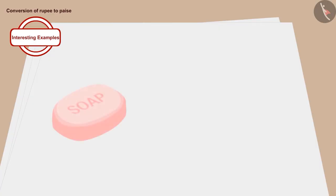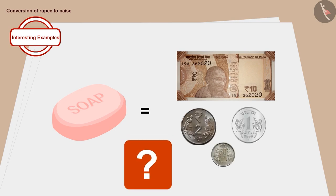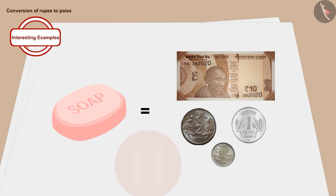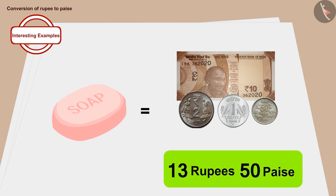Children, here the price of a soap is shown in notes and coins. Can you tell how much the soap costs? If you want, you can stop the video and find the answer. Well done, children — you have found the right answer. The soap costs 13 rupees 50 paise.